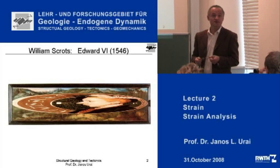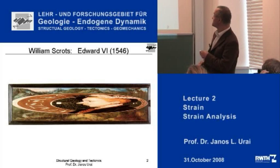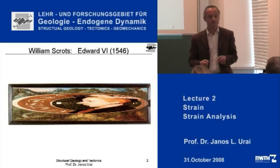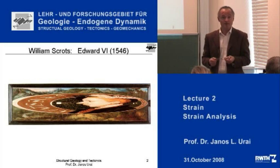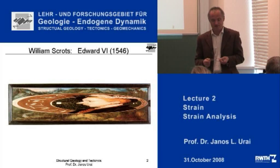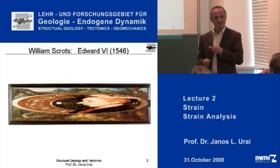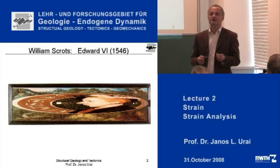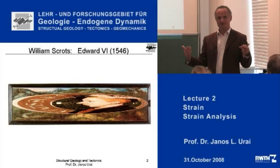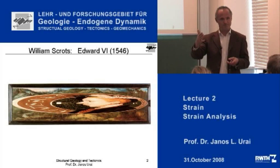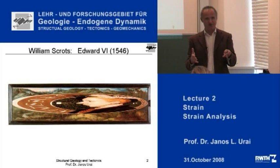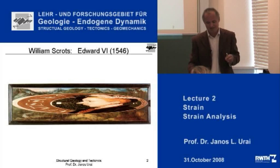Here is a very nice example. This is an actual painting by William Scrotts, painted in 1546. He painted the king Edward VI. Why do you think that this painting looks like this? The reason is that he had to paint it to fit in a very long corridor, and when the king came into the corridor, he had to see himself.